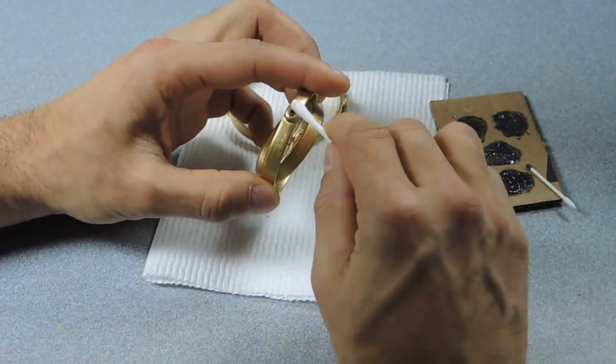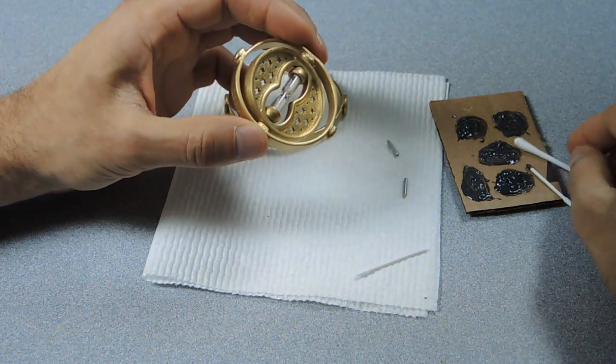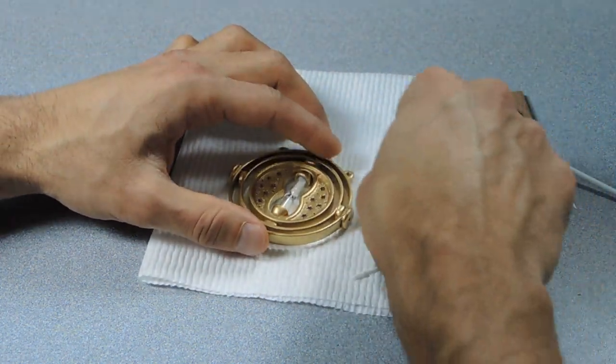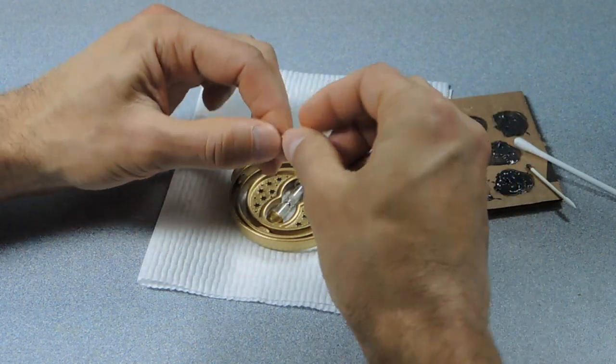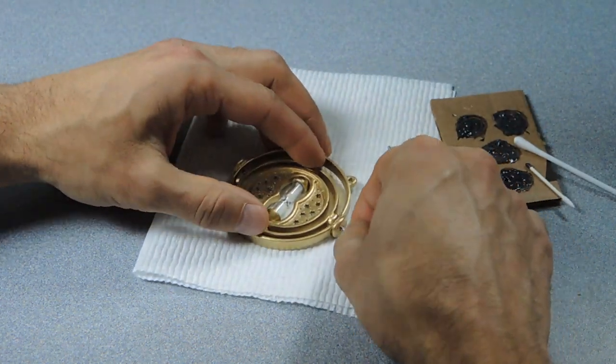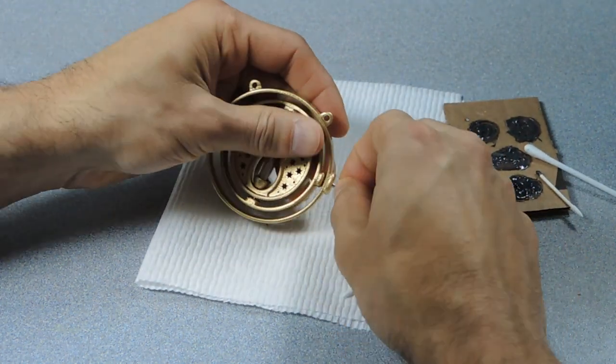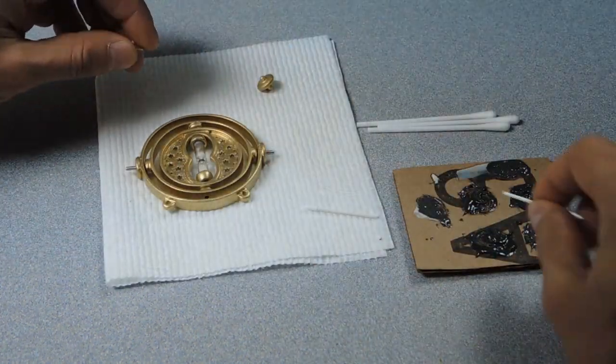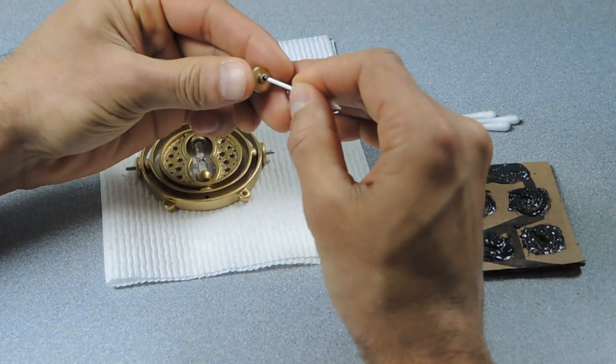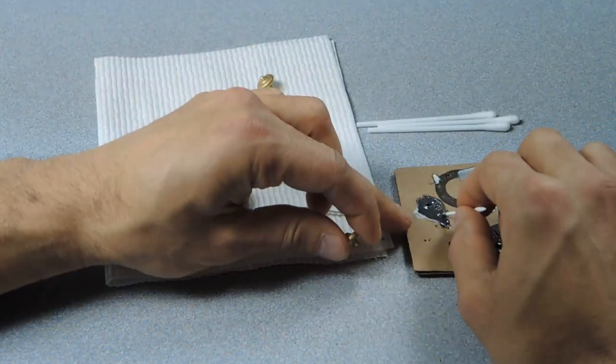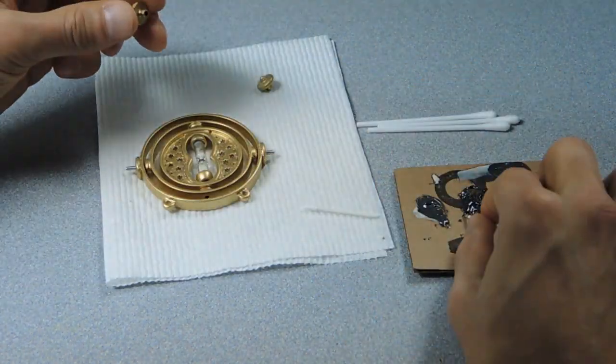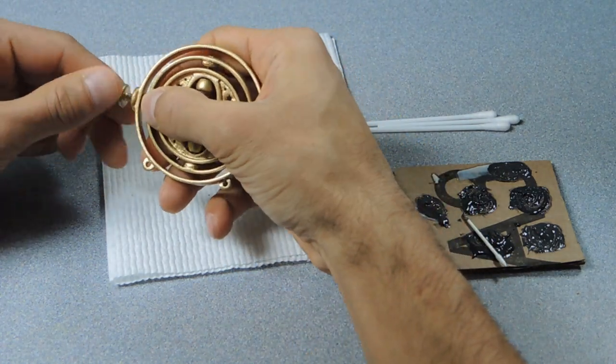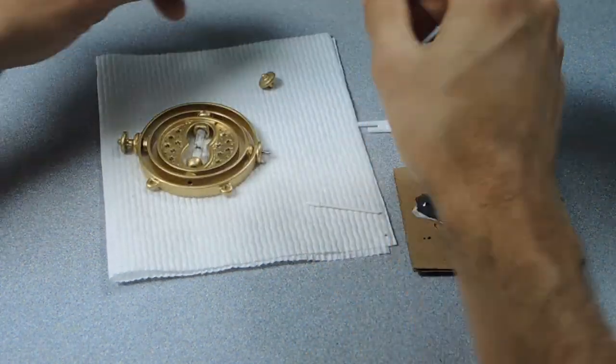Now I'm bonding the inner disc into the middle ring. I've applied epoxy, and now I'll be inserting the dowel pins into the correct holes. And the outer knobs that will allow you to turn the Time Turner get bonded on in a similar fashion. Here you can see I'm adding epoxy and then pressing the knobs onto the dowel pins.